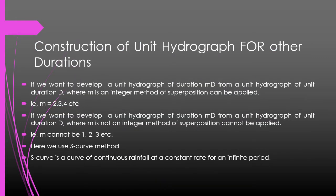First, let us discuss the theory behind constructing a unit hydrograph of a different duration using the S-Curve method. If we want to develop a unit hydrograph of duration MD from a unit hydrograph of given duration D, where M is an integer such as 2, 3, 4, etc., we can use the method of superposition. But if M is not an integer, we cannot apply the method of superposition — instead we use the S-Curve method.